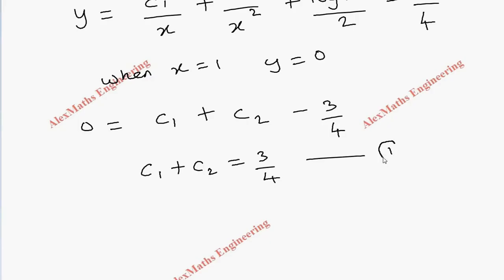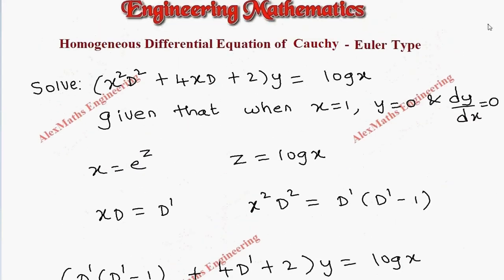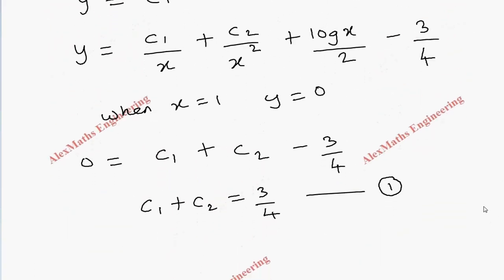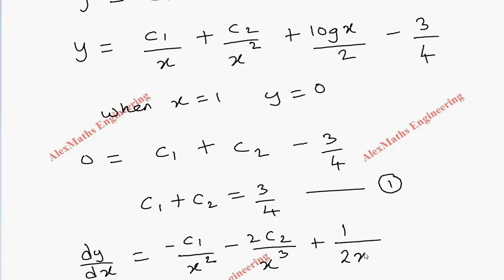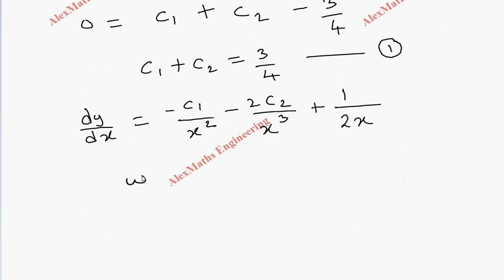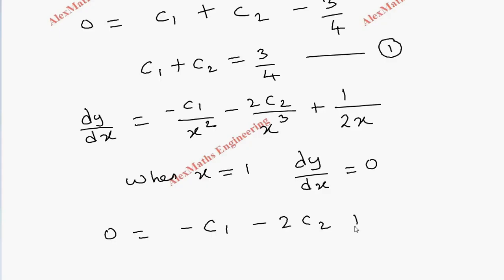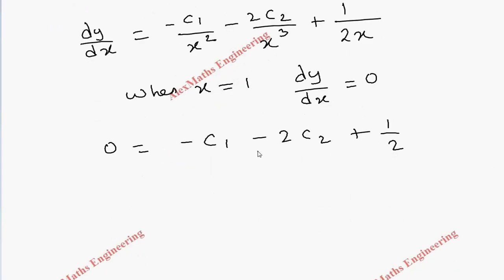For the second condition, when x equals 1 and dy/dx equals 0, we differentiate: dy/dx equals minus C1/x squared minus 2·C2/x cubed plus 1/(2x). Applying x equals 1: 0 equals minus C1 minus 2·C2 plus 1/2. Carrying terms over gives C1 plus 2·C2 equals 1/2. This is equation 2.